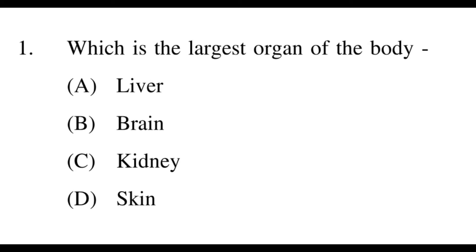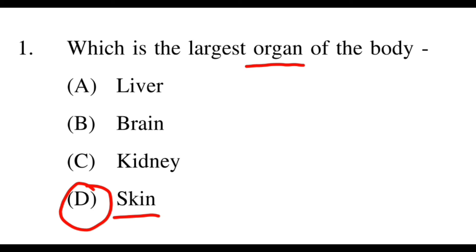First question: Which is the largest organ of the body? Options are liver, brain, kidney, and skin. The right option is skin. Skin is the largest organ. And if we ask about the gland, liver is the largest gland. So liver is the largest gland and skin is the largest organ.